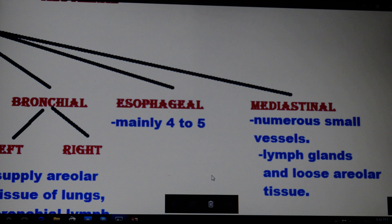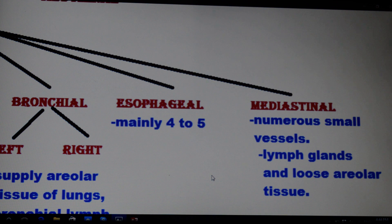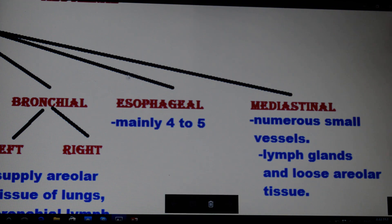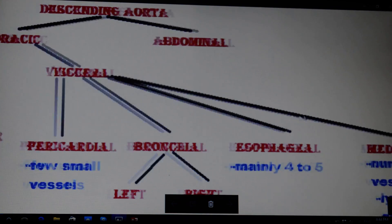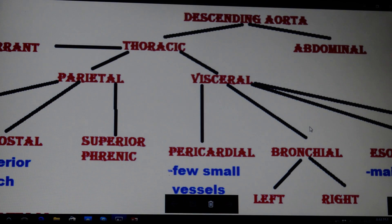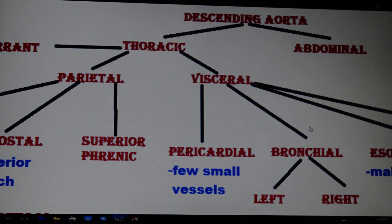Next are the mediastinal branches, which provide blood to the mediastinal cavities through numerous small vessels, lymph glands, and loose areolar tissues along the side. That was all about the visceral branches of the thoracic aorta. Hope you got the basics of the thoracic aorta and its branches. If you have questions, please write in the comments and subscribe. Thank you so much.